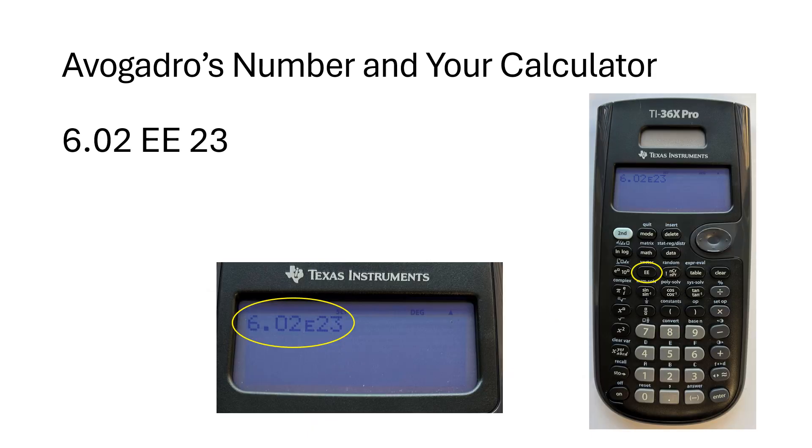Just a quick review. When you type Avogadro's number into your calculator, you want to hit 6.02 EE, right? Just that one key on your calculator, which is circled over here on the picture of the calculator, 6.02 EE 23. And also just a quick reminder, when you look at your display, the display only shows one E, even though the button has two E's on it. Again, if I ran the world, those two things would be the same, the button and the calculator display, but I don't run the world.